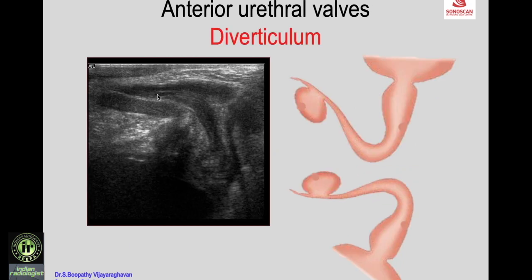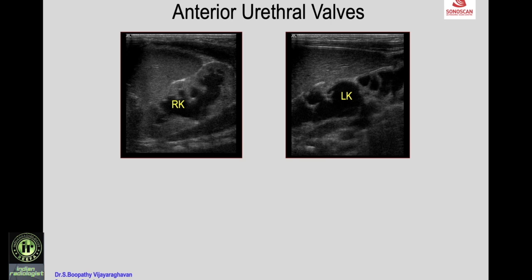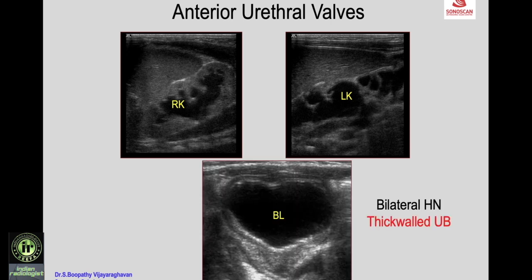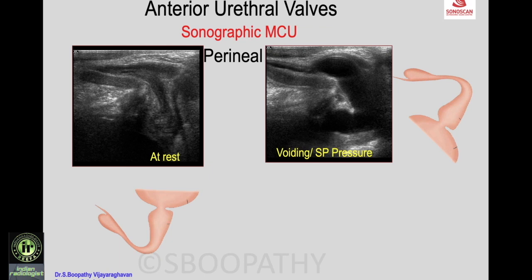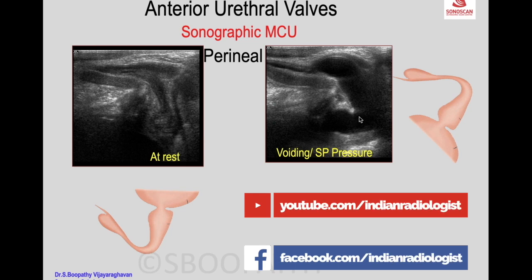On perineal scan in a child, the bladder, pubic symphysis, and urethra are seen with a normal-appearing urethra but a small oval cystic structure indicating an anterior urethral diverticulum. When the child voids, urine enters the diverticulum and causes obstruction to the urethra. In another child with bilateral ureteronephrosis, perineal scan shows a normal urethra at rest with the diverticulum, but on voiding, gross dilatation of the posterior and anterior urethra up to the diverticulum is seen.